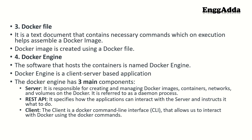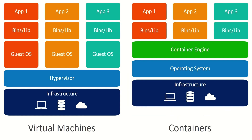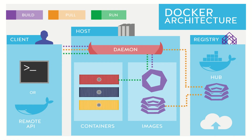The software that hosts the containers is named Docker engine. Docker engine is composed of three components and is a client-server based application. The three main components are: the server, REST APIs, and the client. The client is a command line interface where we can run commands, and using the REST APIs we communicate with the Docker daemon or Docker host. So Docker engine is composed of the client, APIs, and the host.